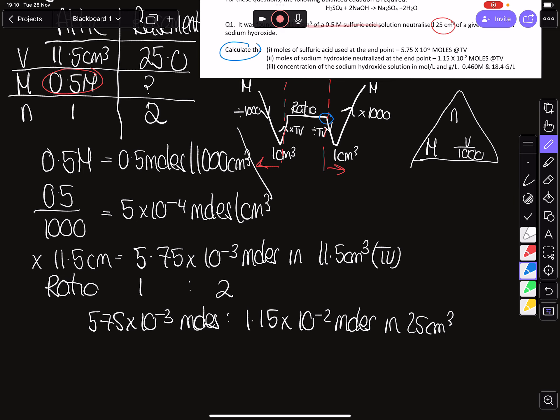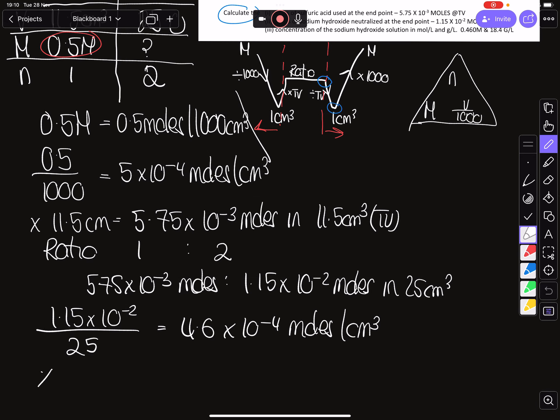So once I use my ratio, I am now at this point over here. So here I'm going to divide by my titration volume. We take our 1.15 by 10 to the minus 2, I'm going to divide it by 25. When I do that I get 4.6 by 10 to the minus 4 moles in a centimeter cubed.